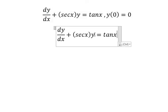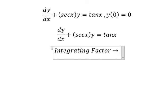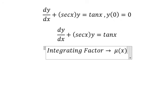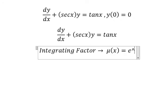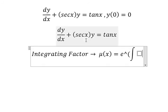We know that we have the original function here: dy over dx. That's about the first derivative of the function. So we can use the integrating factor. We have mu of x equals to e to the power of the integral. We see that secant of x next to y, so that's about the integrating factor.